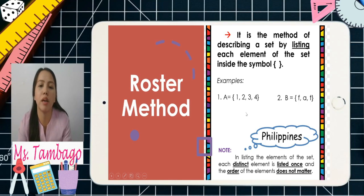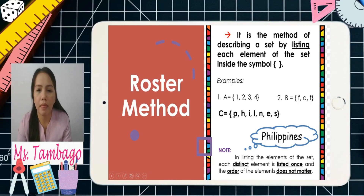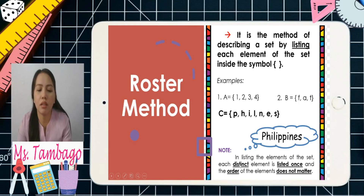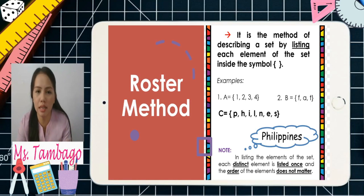So for Set C using the word 'Philippines', we write: {p, h, i, l, n, e, s}. In this word, there are three p's and three i's, but remember the term distinct — each element is written only once. Elements should not repeat; they must be unique. Remember those terms.